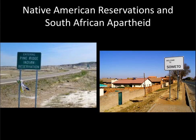The reservation system, which we've already touched on, and apartheid in South Africa are ways of separating people into racially or culturally distinct spaces. Soweto, or Southwest Township, was created by the white South African government in the 1930s to keep black workers out of nearby Johannesburg. It also became a key site of anti-apartheid resistance during the apartheid era.